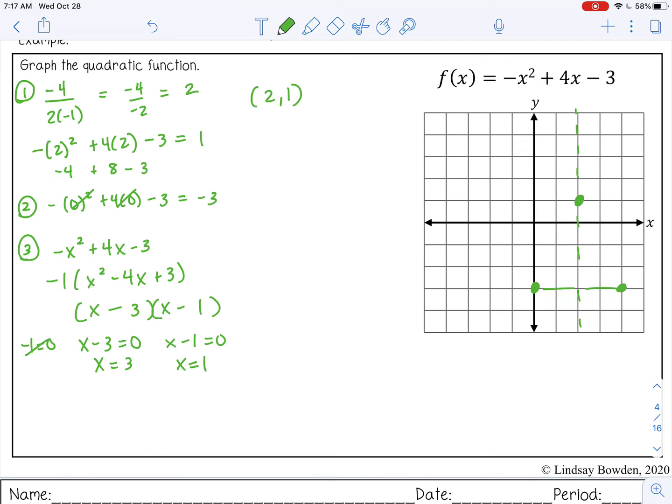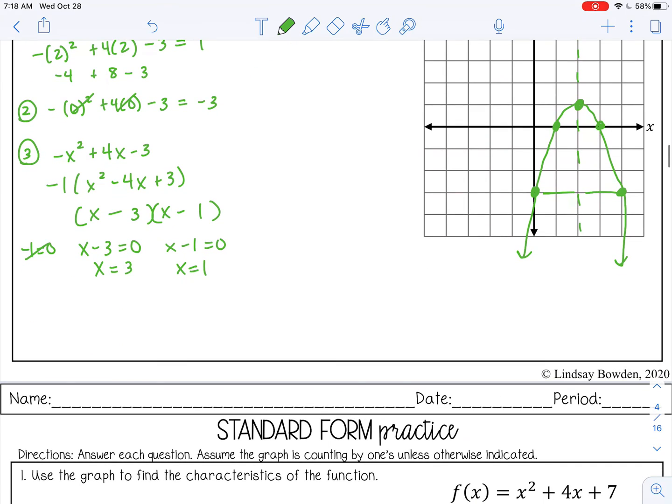So x equals 3 and x equals 1. Let's go ahead and graph those. 3 and 1. And I don't think I need any other xy table points. So I'm going to skip step 4, and I'm just going to draw my parabola. And I know it opens down because it has a negative a. You can go ahead and stop the video and complete your practice.